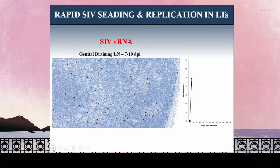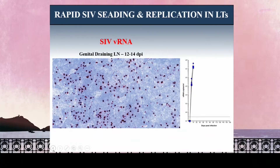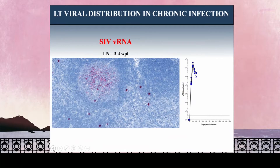Just several days later, around days 7 to 10, the landscape of productively infected cells has changed dramatically — there's been an augmentation of productively infected cells within the lymph node. This is at a time point when we can detect virus systemically, and this virus is really found in all of the different lymphoid tissues throughout the body: in the GI tract, in the spleen, and all of the non-draining lymph nodes as well.